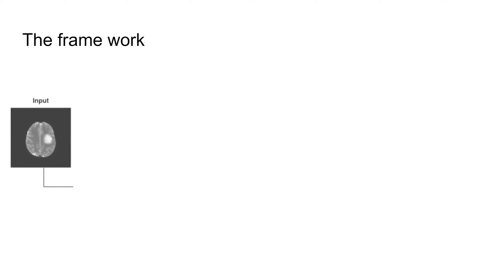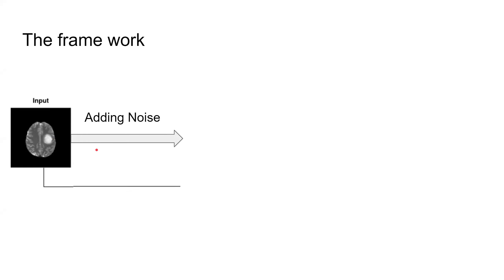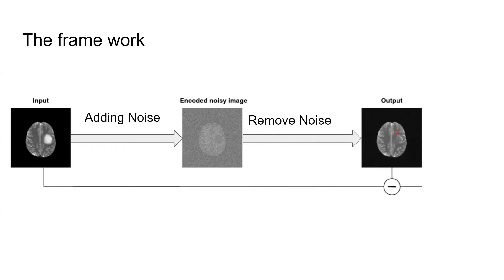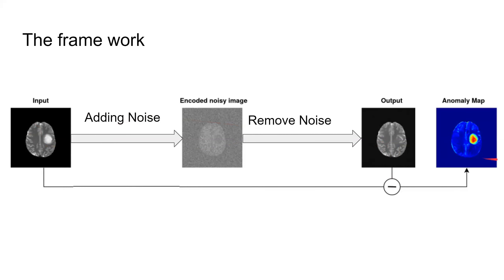Let me introduce the framework from a high-level perspective first. At the beginning, we give the abnormal image — in this example, a brain tumor — to our model. Then we slightly add noise, which is part of the diffusion process. We encode these images with Gaussian noise, then gradually remove the noise to form the output, which is the healthy brain MRI. Instead of the input, which is the abnormal image. The last step is to subtract the output from the input to form the anomaly map.